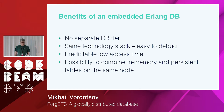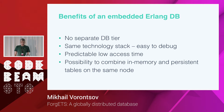The third benefit is predictable access time. If your data is very close to your CPU, you know that you can access it in the microsecond time range instead of having the network be one hop away. Finally, with an embedded database you are free to combine several types of tables with different persistence or replication policies on the same node, and you can create quite performant setups.